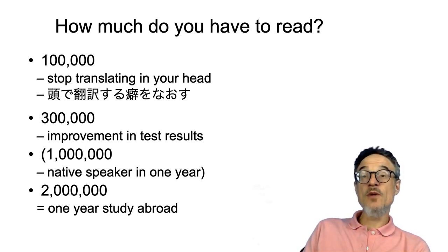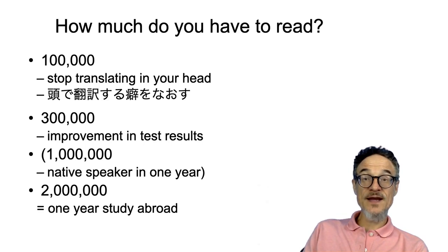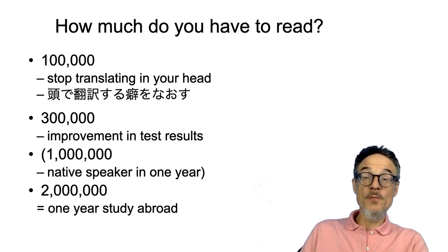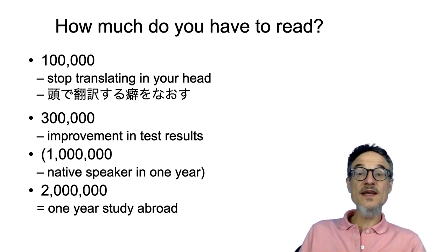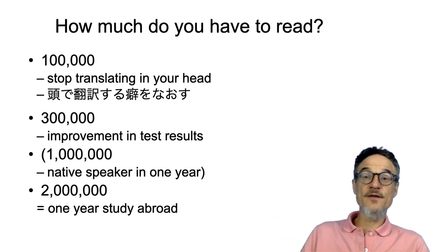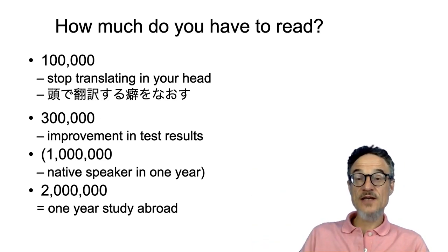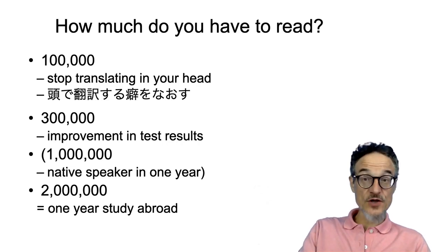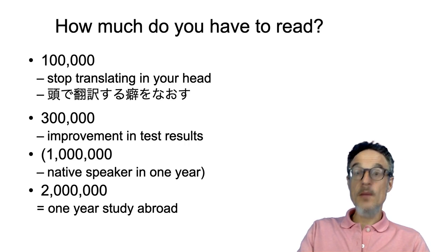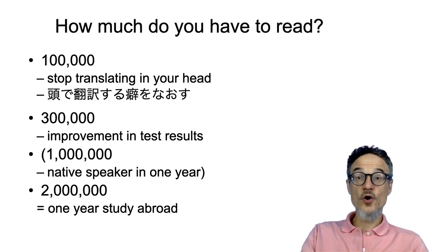A million words is how much a native speaker reads typically in one year. A million words may seem like a very big number, but for a native speaker, that's a kind of average year. Someone has calculated that if you read two million words, that's the same benefit for your language ability as studying abroad for a year. If you had the chance, go and study abroad — but if you don't, reading may be much cheaper, and you can do it in your own home or wherever you want.